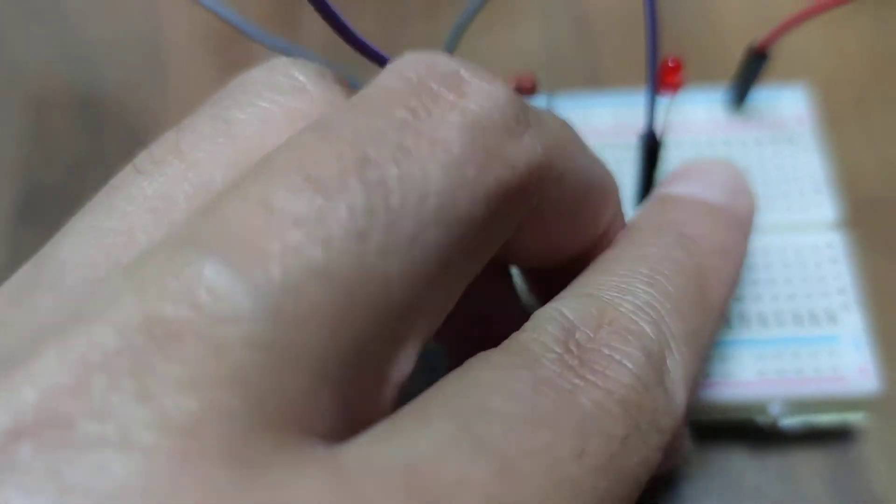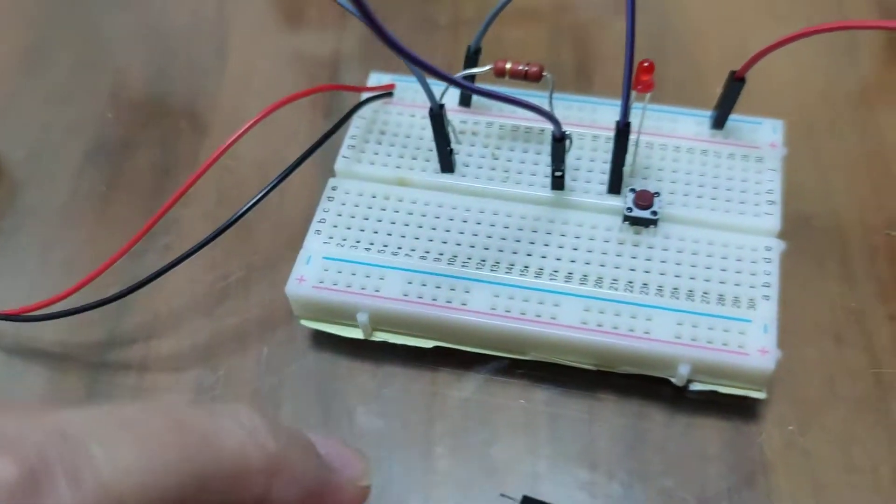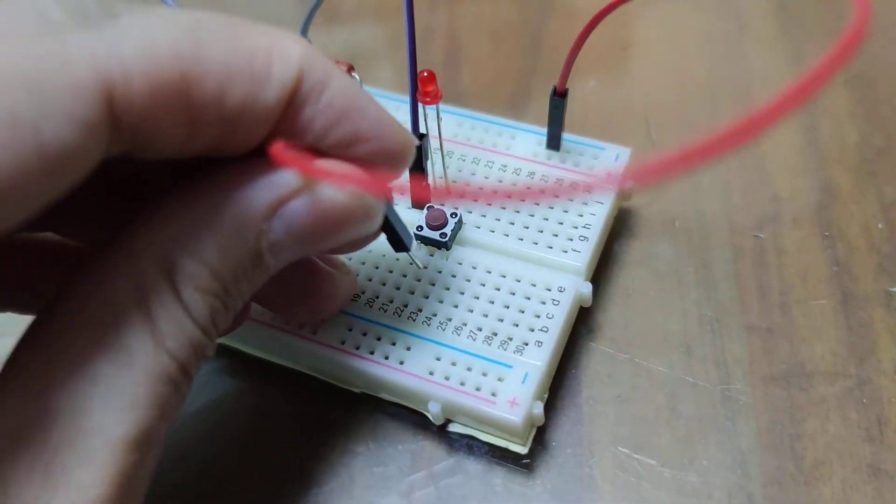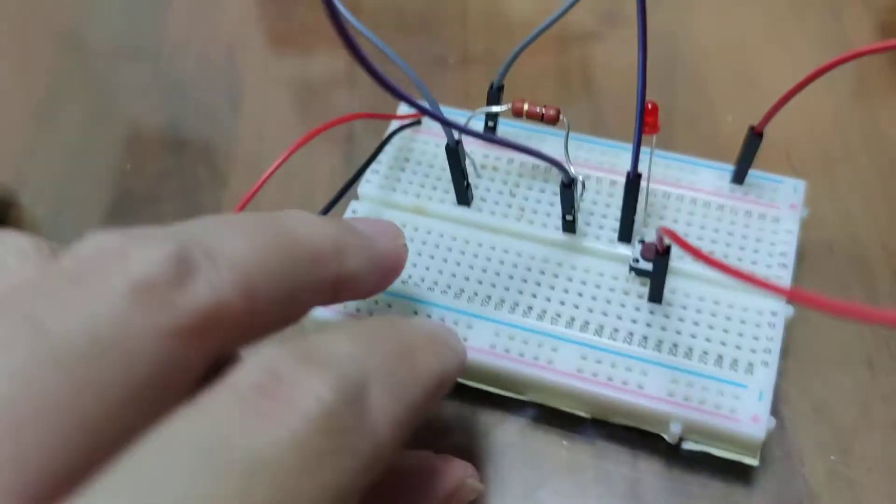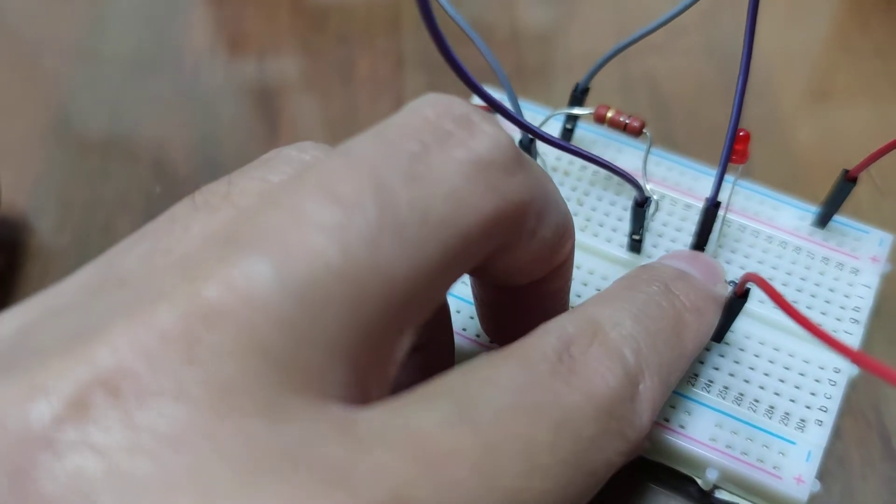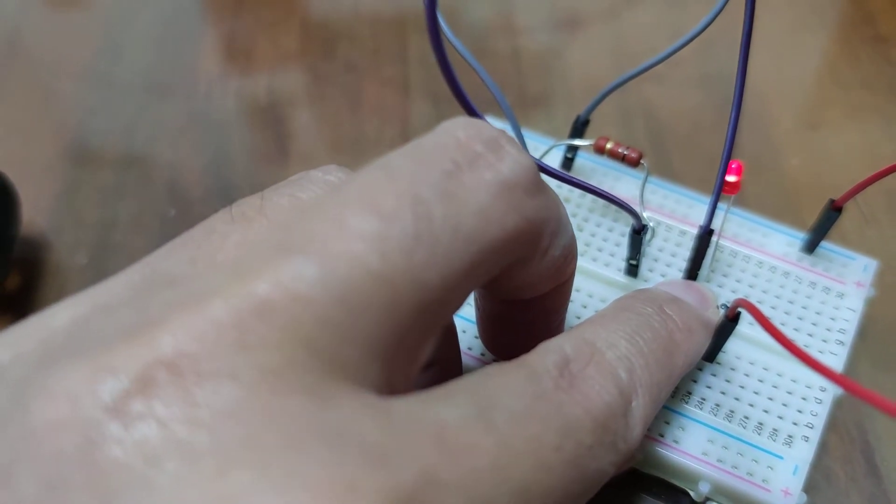Now there's a few ways that you can connect this. Give that a good push down. Don't worry if you press the button, nothing's going to happen. So there's a few ways you can connect this. This is one way, diagonally across. So you can test this by pushing the switch. You can see the light's coming on.